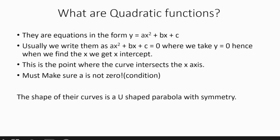So what are quadratic functions? They are equations in the form of y = ax² + bx + c. They are usually written as ax² + bx + c = 0, where y is taken as equal to zero. Hence when we find x, we get the x-intercept — the point where the curve intersects the x-axis.